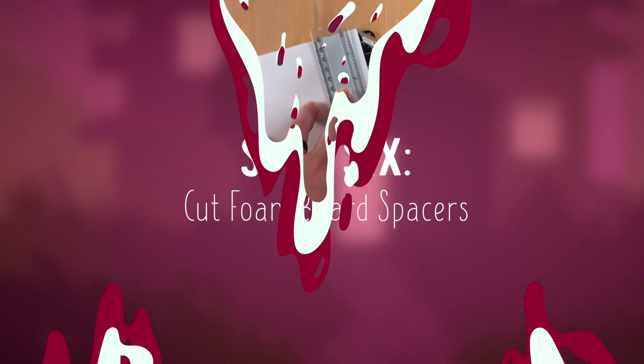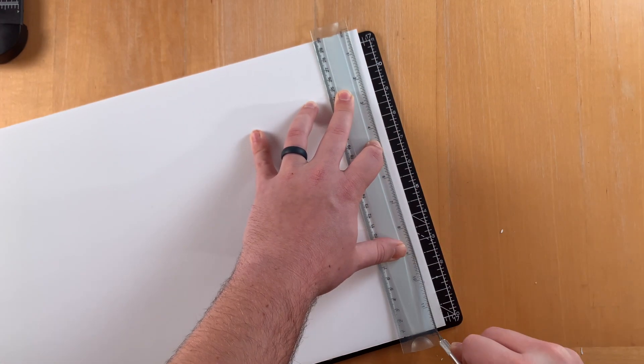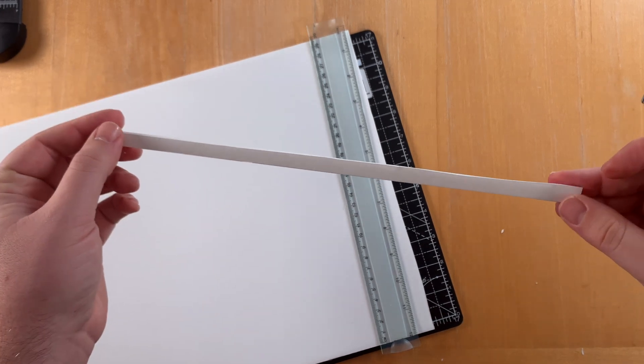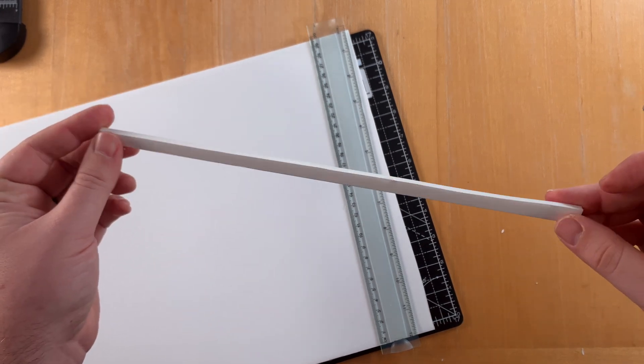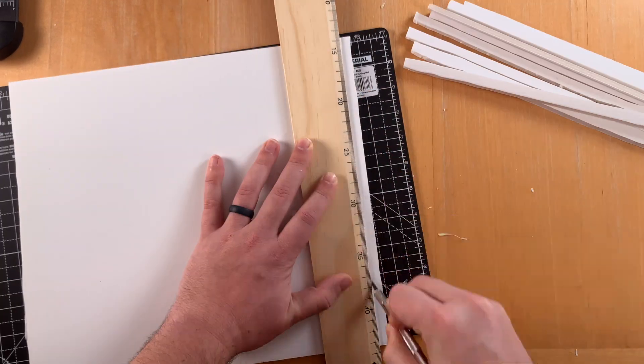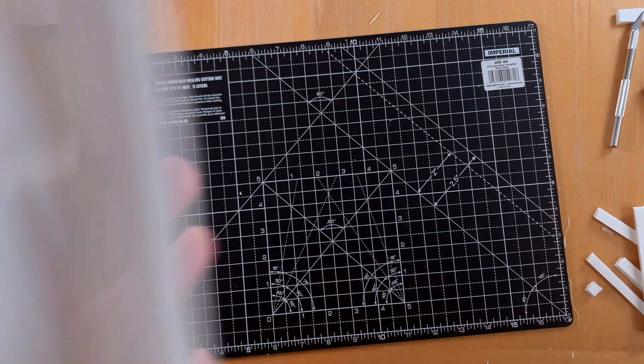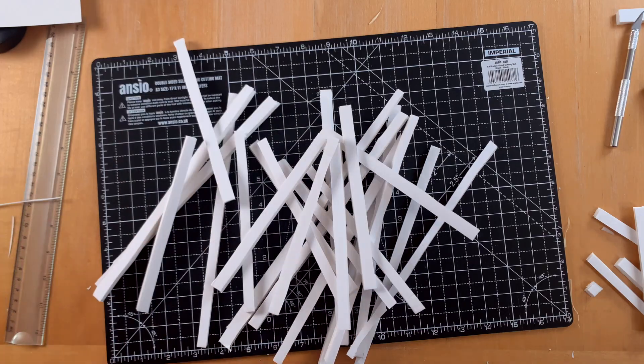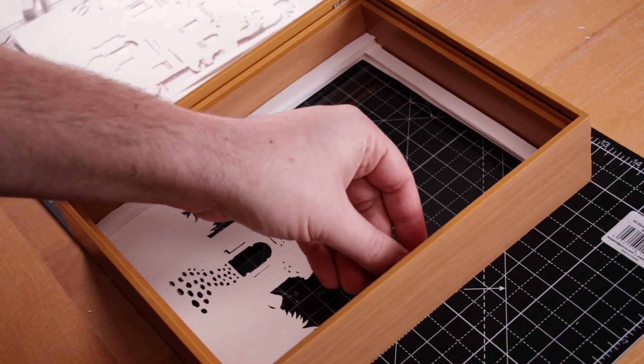Let's start on our spacers. We'll place foam spacers along the outside edges to separate each layer. Measure and cut each spacer to fit along the outside edges of each layer, but thin enough to keep them hidden. You'll have quite a few of these when you're done.